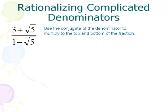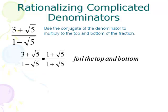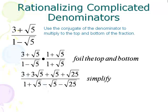When the bottom of the fraction has a square root but has more to it — like here we have 1 minus square root of 5 — we have to multiply the top and bottom by the conjugate, or the opposite of the bottom. We take 3 plus square root of 5 over 1 minus square root of 5 and multiply by the conjugate 1 plus square root of 5 on both top and bottom. This requires us to FOIL the top and FOIL the bottom. FOILing the top: 3 times 1 is 3; outside gives 3 square root of 5; inside gives 1 square root of 5; and last gives square root of 25. FOILing the bottom: first gives 1; outside gives positive square root of 5; inside gives negative square root of 5; last gives negative square root of 25.